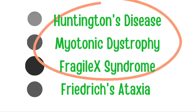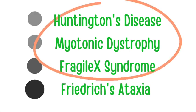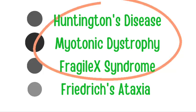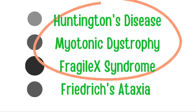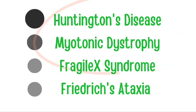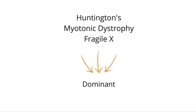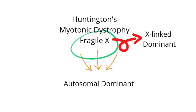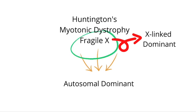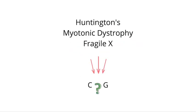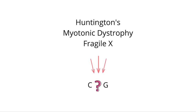We're going to zoom in on the first three diseases because they have some high yield similarities. Huntington's disease, myotonic dystrophy, and fragile X syndrome all have a dominant inheritance pattern. Fragile X syndrome has an X-linked dominant inheritance pattern while the others have an autosomal dominant pattern. Another high yield similarity is that their trinucleotide repeats all start with C and end with G.